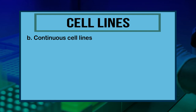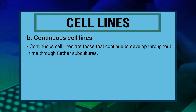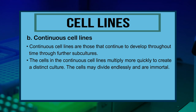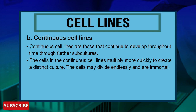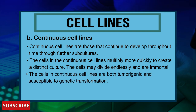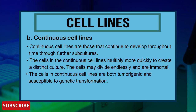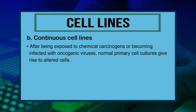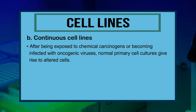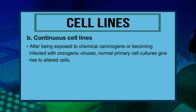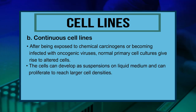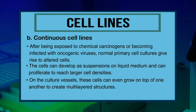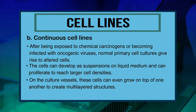Continuous cell lines are those that continue to proliferate throughout time through further subcultures. The cells multiply more quickly to create a distinct culture, can divide endlessly, and are immortal. The cells in continuous cell lines are both tumorigenic and susceptible to genetic transformation. After being exposed to chemical carcinogens or oncogenic viruses, normal primary cell cultures give rise to altered cells. The cells can develop as suspensions on liquid medium, reach larger cell densities, and even grow on top of one another to create multi-layered structures.